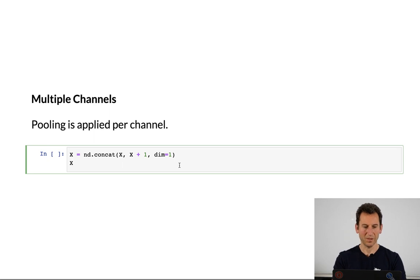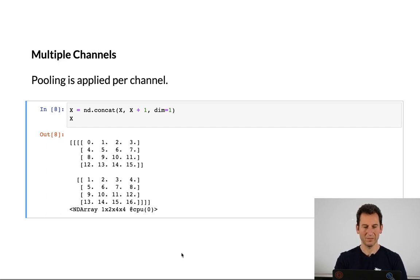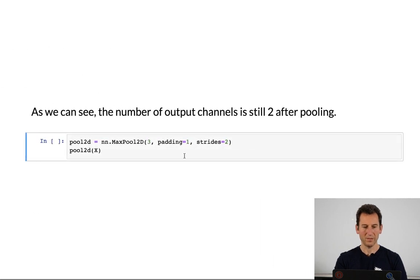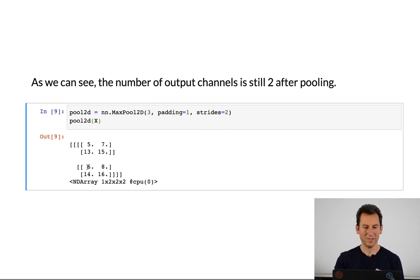Let's demonstrate that. I'm going to create a matrix with two channels — basically my 4x4 matrix, where one channel has entries going from 0 to 15 and the next from 1 to 16. Now if I apply pooling again with padding of 1, strides of 2, and 3x3 pooling, I still get two output channels. Since the second channel has all entries one larger than the first, I get exactly 5, 7, 13, and 15 for the first channel, and 6, 8, 14, and 16 for the second — exactly what's expected.